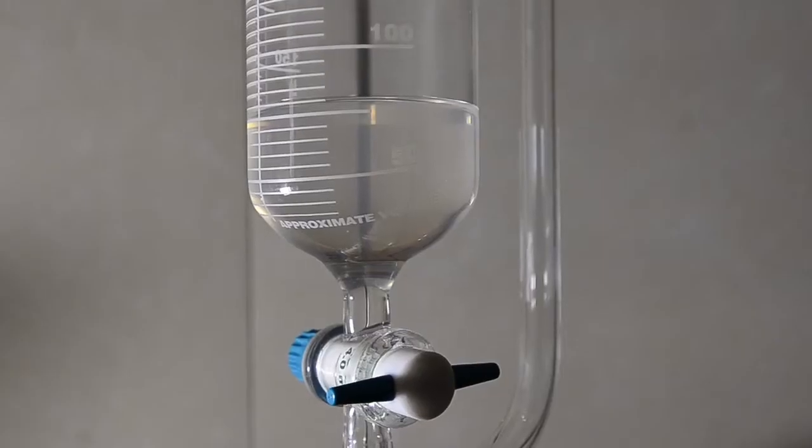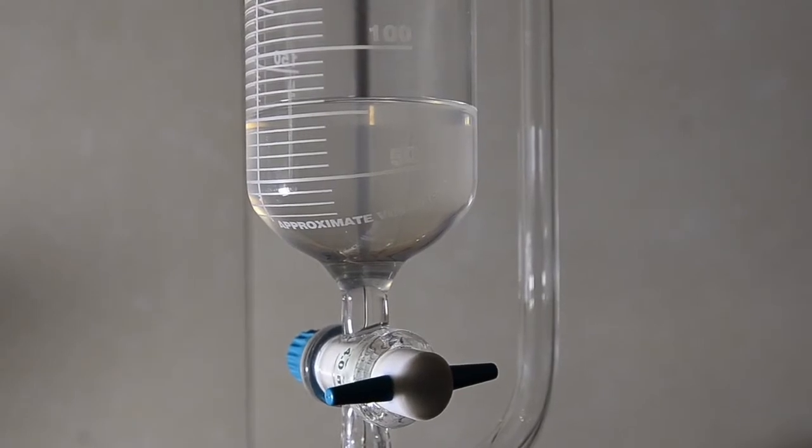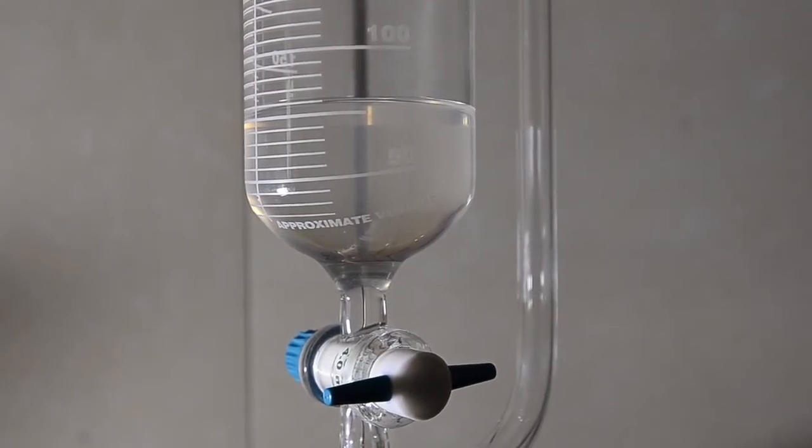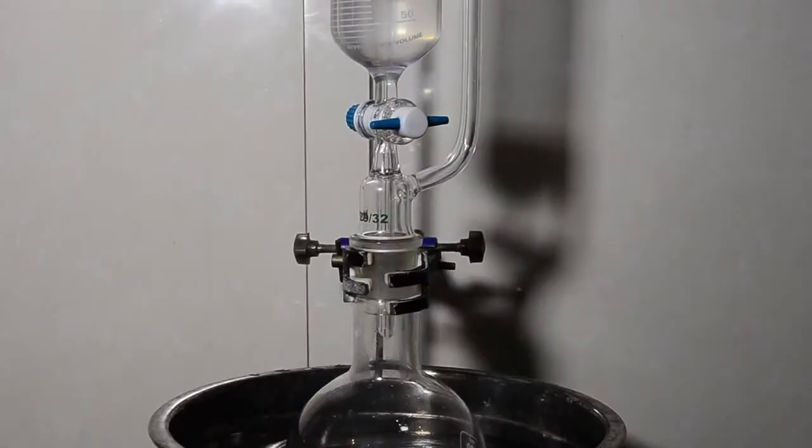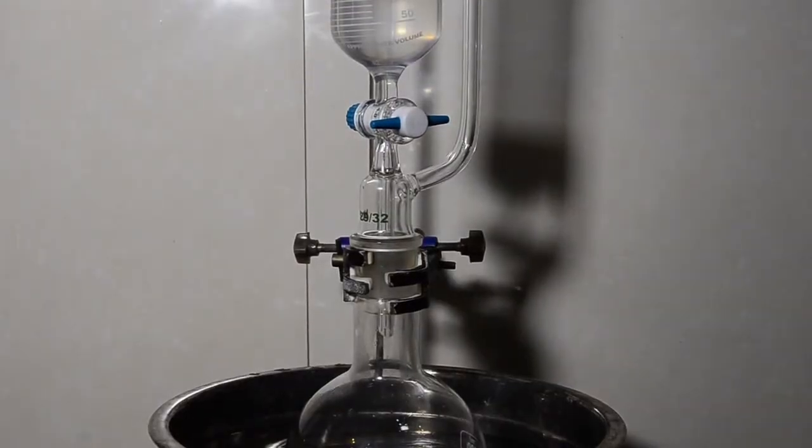Set up an addition funnel on top of the flask and add the phosphorus trichloride to it. You'll also need a way to vent the flask as a lot of HCl gas will be produced. I've used a pressure equalized funnel but you could use a multiple neck flask or other setup.